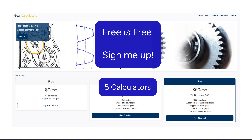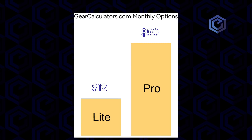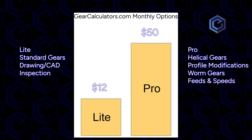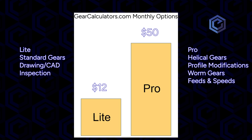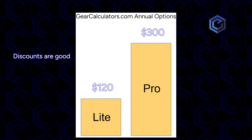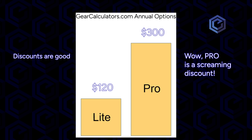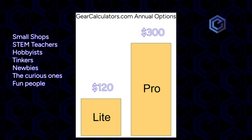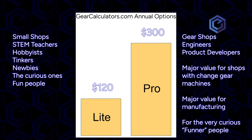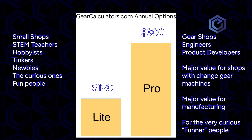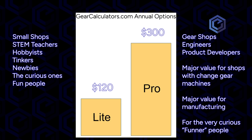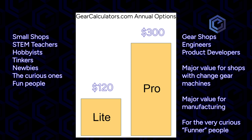Here are the monthly options. Free is free, and there are a few calculators in there that are very valuable and you'll enjoy. Or $12 a month for Light, and $50 a month for Pro. When you pay for a whole year at once, you get a pretty good discount — Light for $120 a year, and Pro for only $300 a year. The Light tier has everything you need to design and inspect gears, perfect for a small shop or gear hobbyist. The Pro tier offers additional calculators for prototype development, including DXF and STL generators, manufacturing setups, feeds and speeds, and advanced profile shifted gears for both manual and CNC machines.